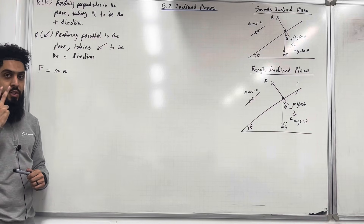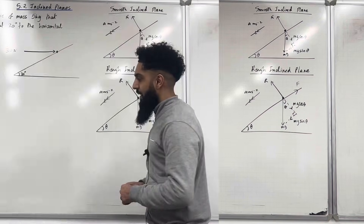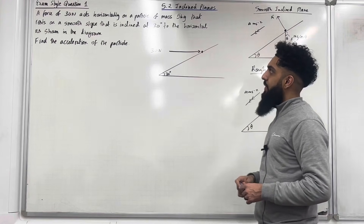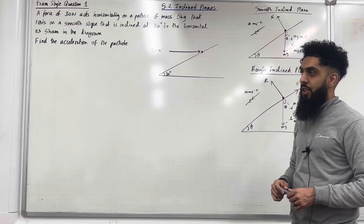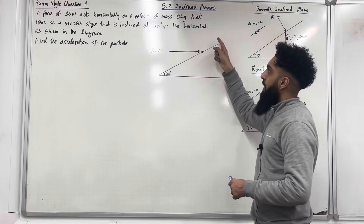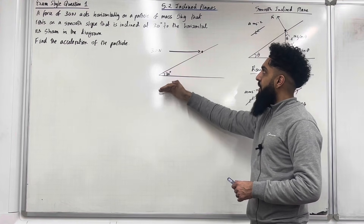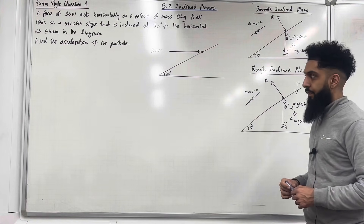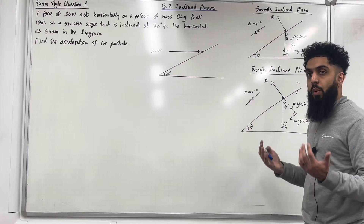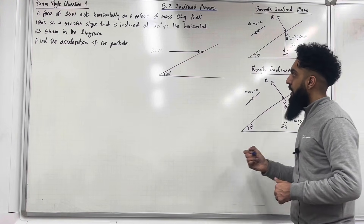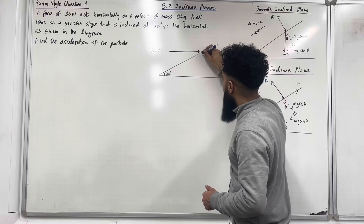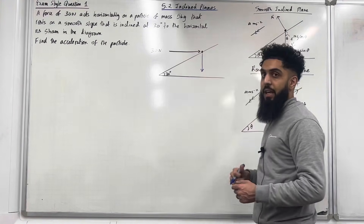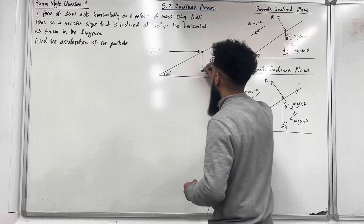Now I'm going to go through two exam-style questions. Exam-style question one: a force of 30 newtons acts horizontally on a particle of mass 5 kg that rests on a smooth slope inclined at 30 degrees to the horizontal. Find the acceleration of the particle. First, we label all the forces. We have the weight acting vertically downwards, which is 5g (mass 5 multiplied by g, acceleration due to gravity).